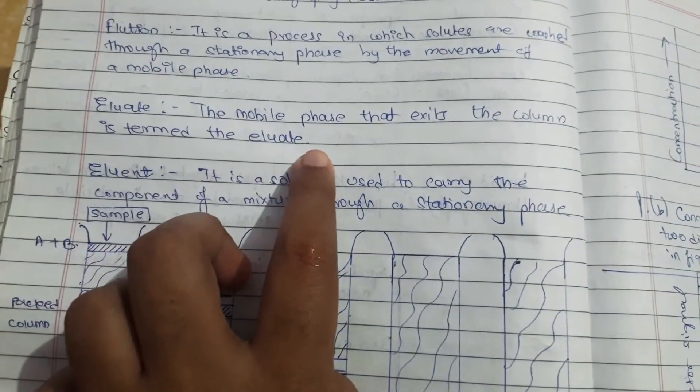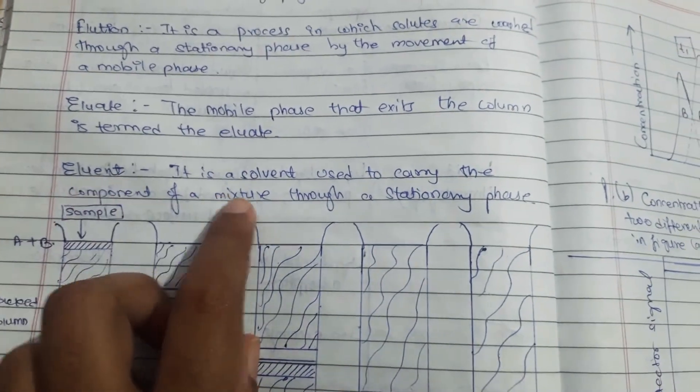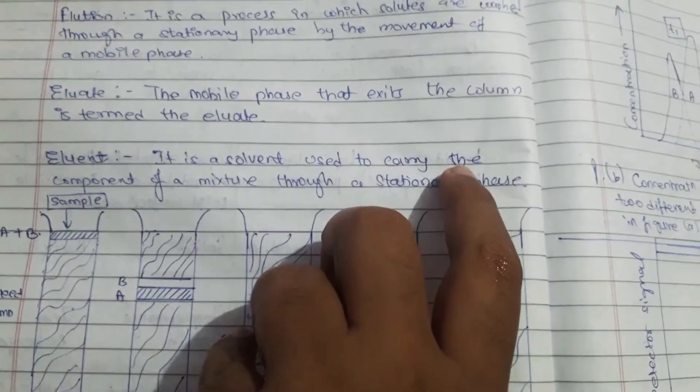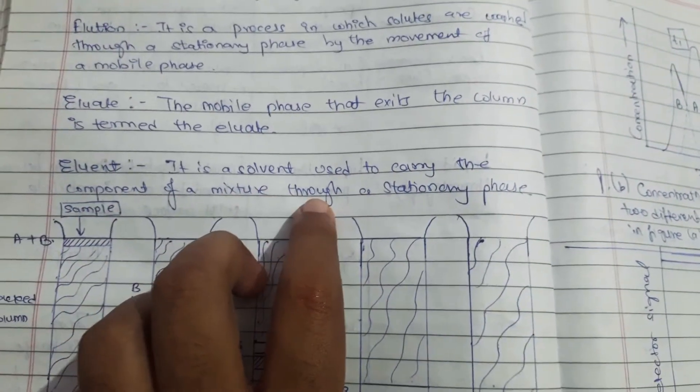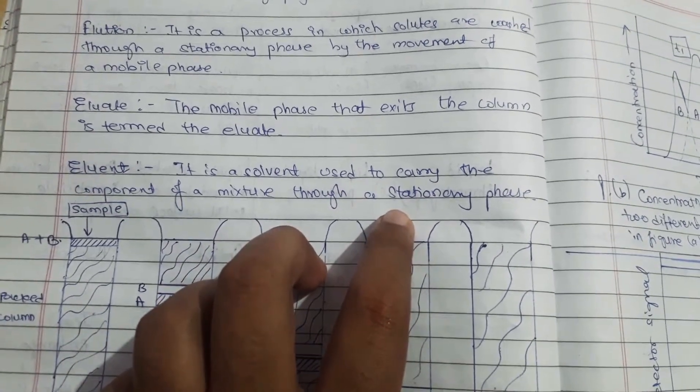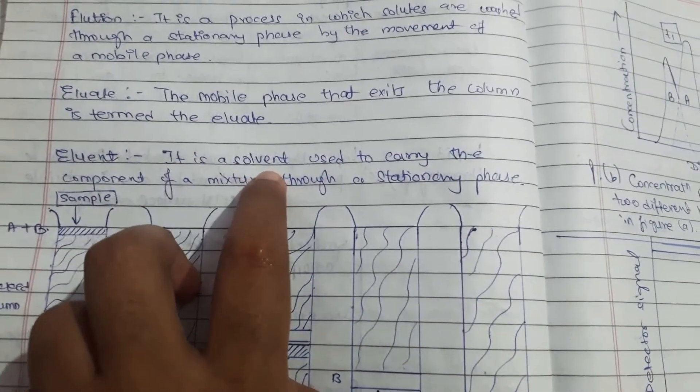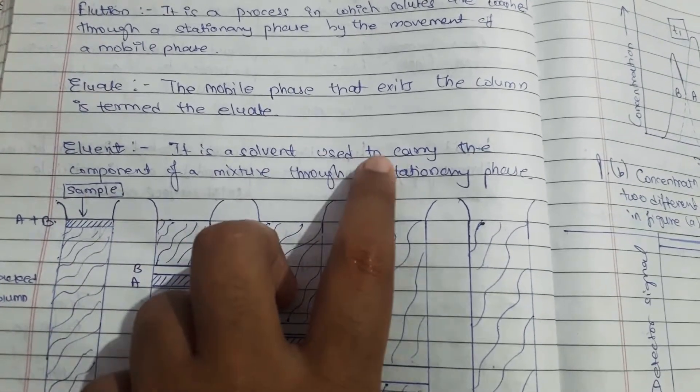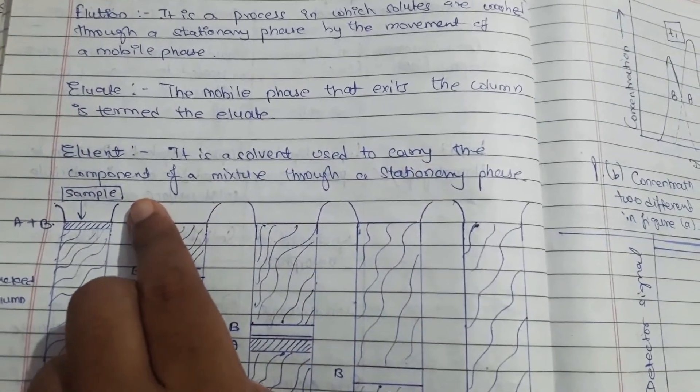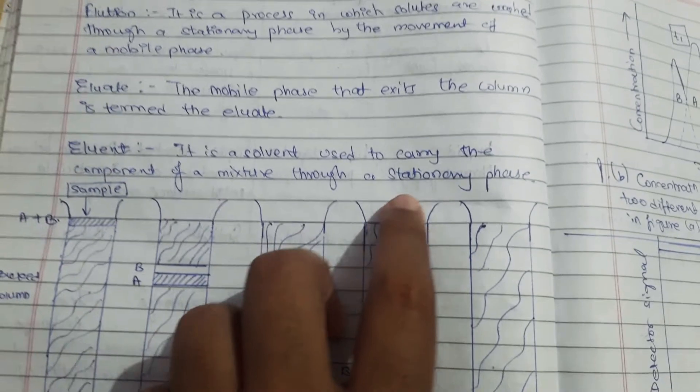The mobile phase which goes out of the column is called eluent. Eluent is a solvent used to carry the components of a mixture through a stationary phase.